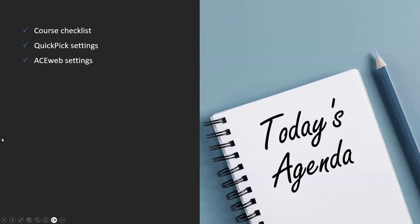We're going to go over just a basic course checklist. We should have one of these already, or at least a general idea, before opening regular ACE Web registration. When we're putting our courses together, what are we verifying? We're going to look at some Quick Pick settings and also some of our ACE Web settings — the trifecta of what we need to watch out for.